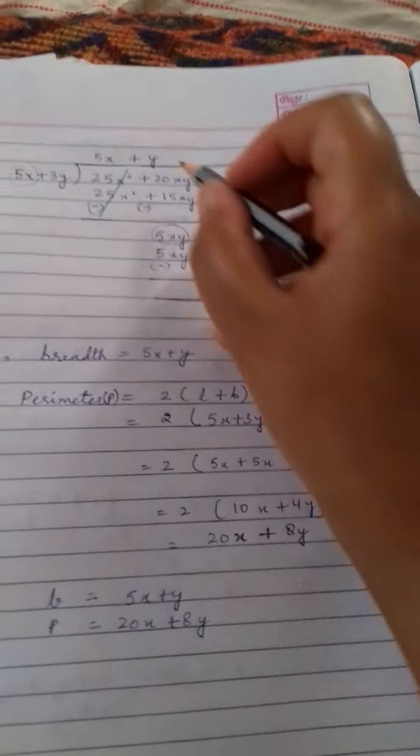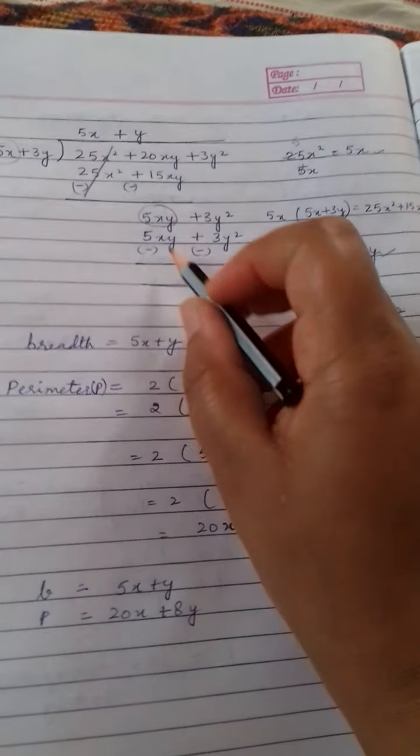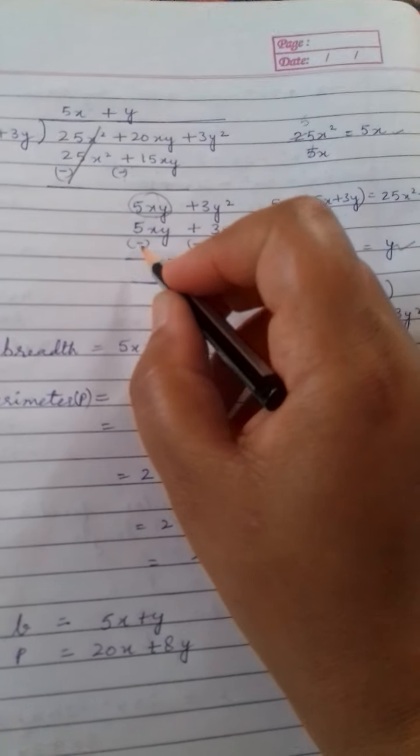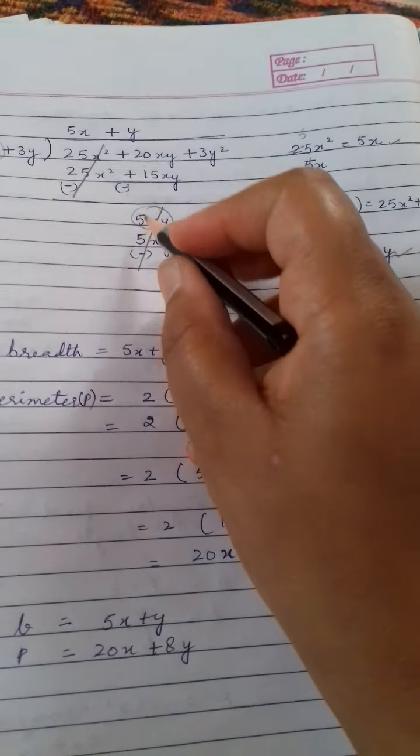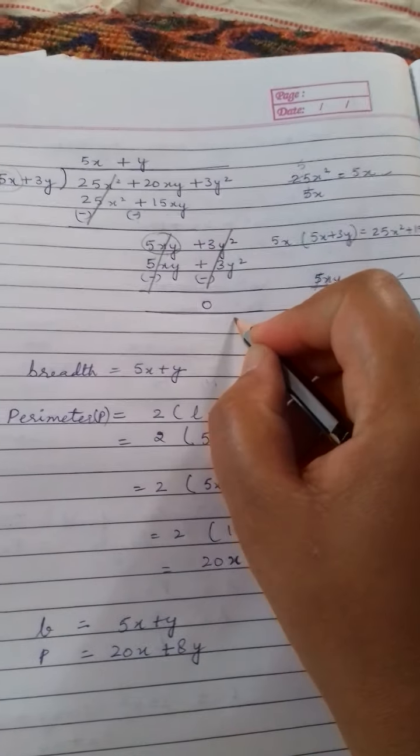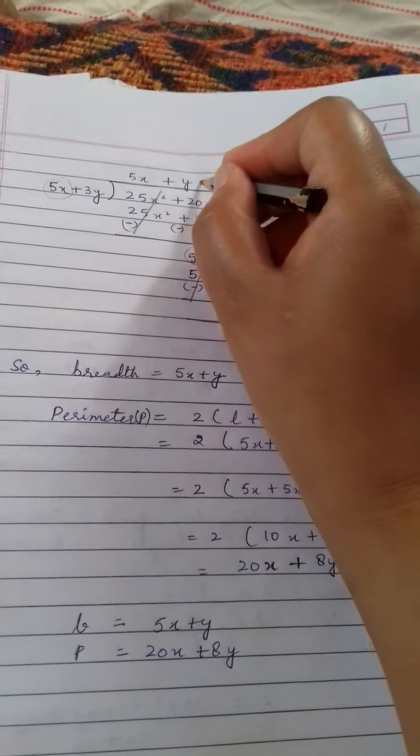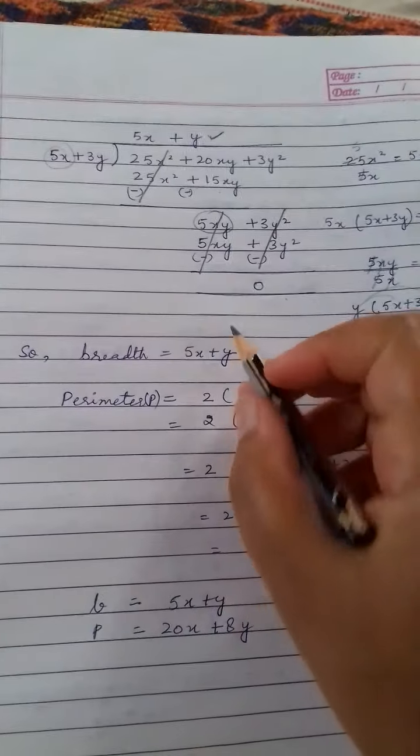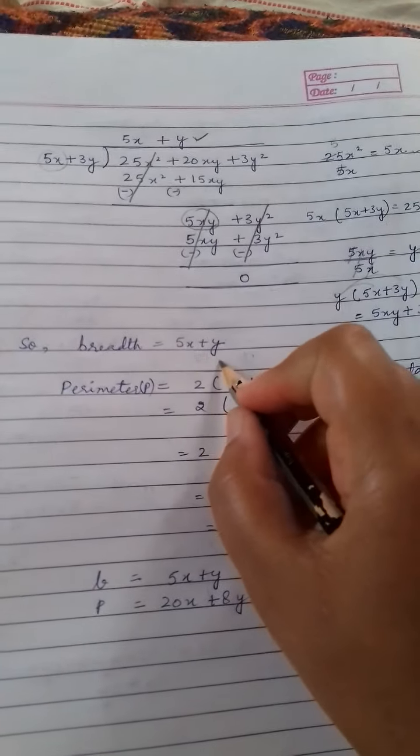Now put this plus y over here and this result over here. Now again, change the sign children. Plus minus cancel, 5 minus 5 is 0, and plus minus cancel, 3 minus 3 is 0. So the remainder is 0 and this is our quotient. And this is our breadth. So breadth is equal to 5x plus y.